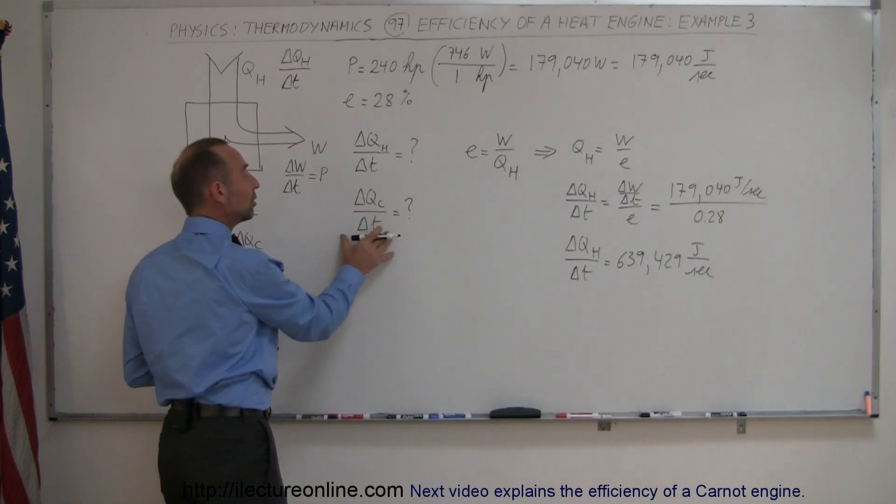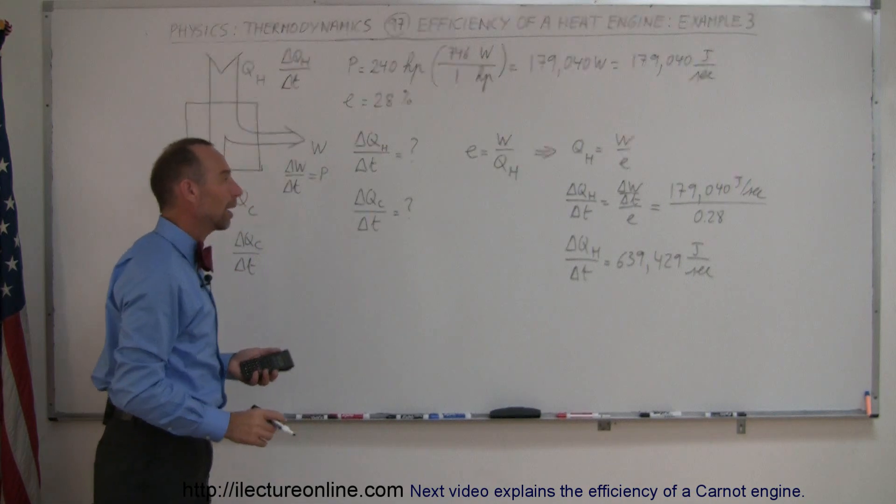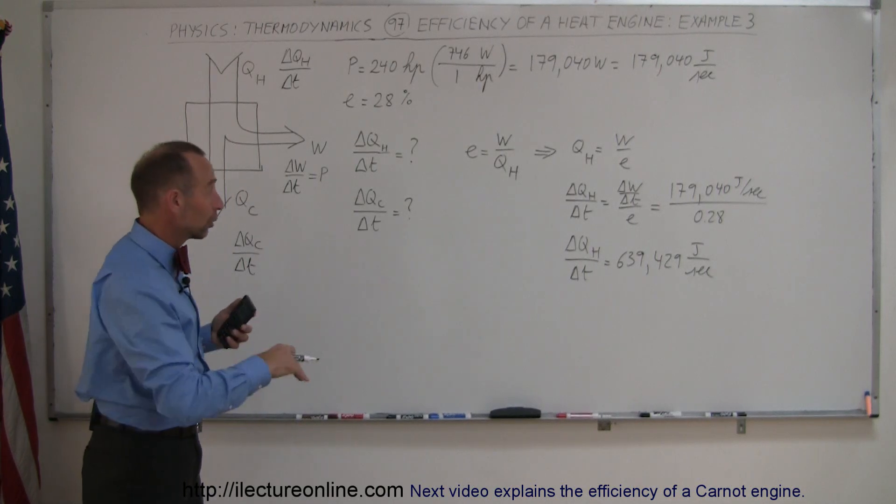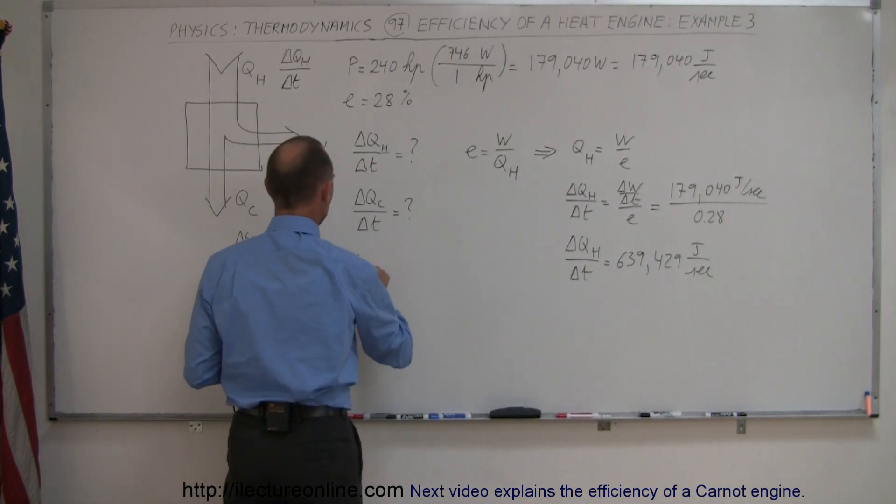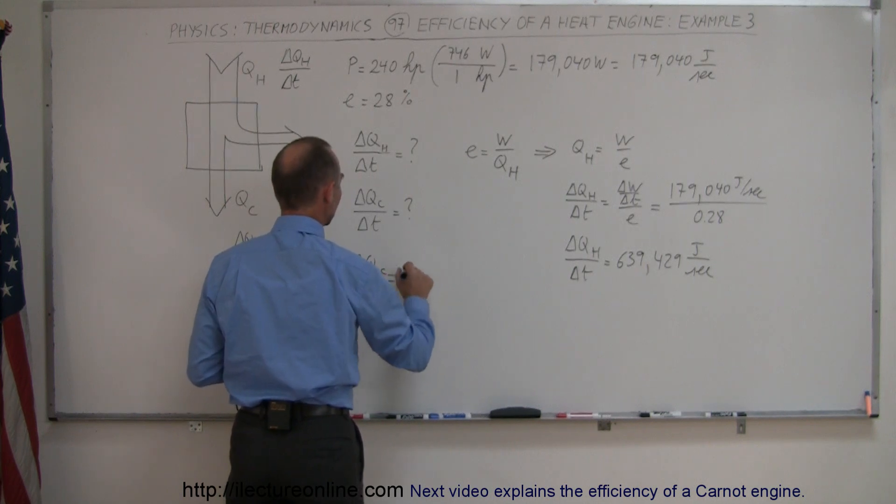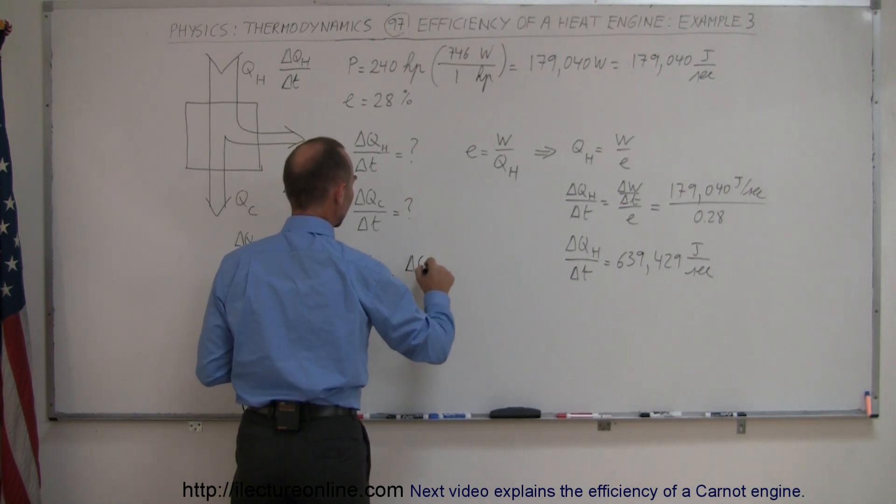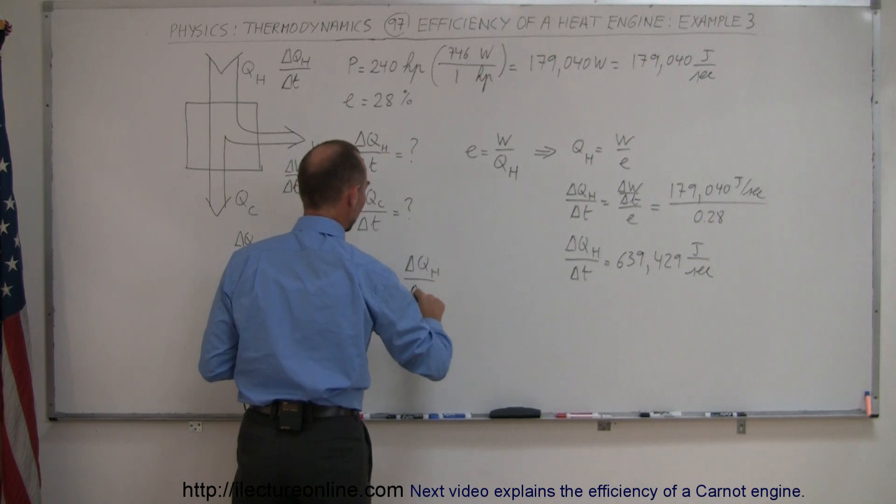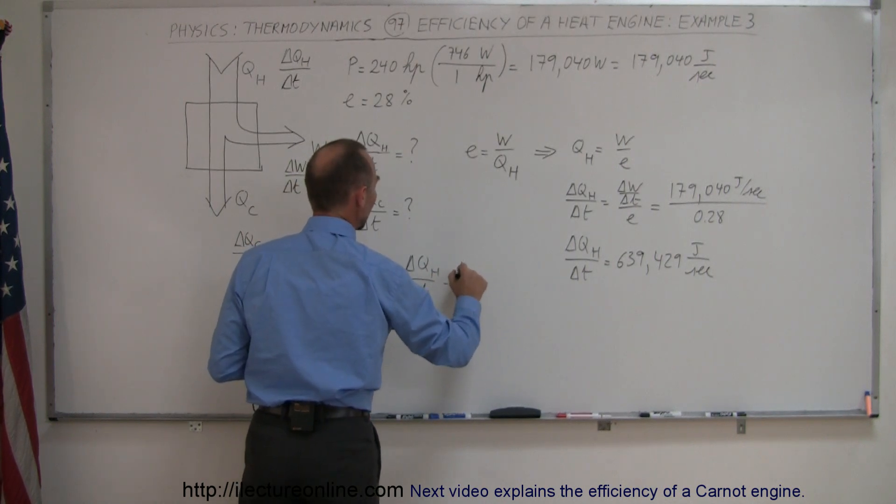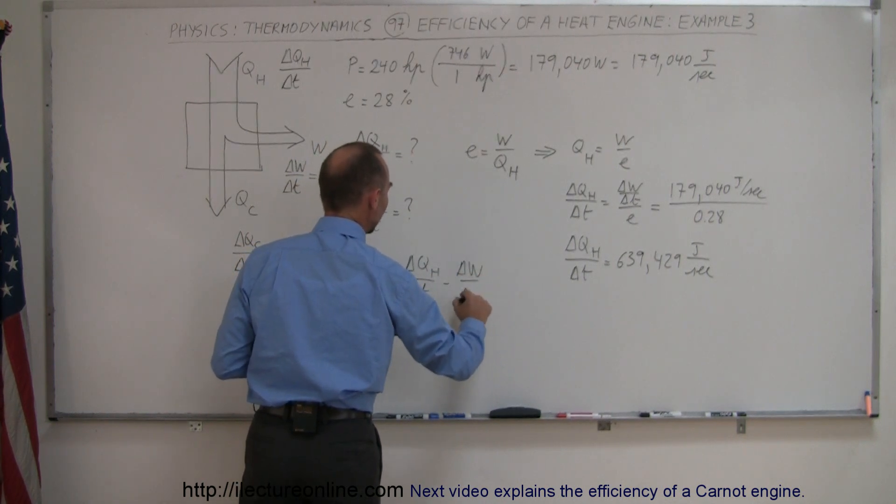Second part is we want to know how much heat we dump into the hot reservoir, and of course I mean in the cold reservoir, and we can say well the delta Q delta T to the cold reservoir is equal to the amount of heat that we extract from the hot reservoir minus the amount of work that we do per unit time.